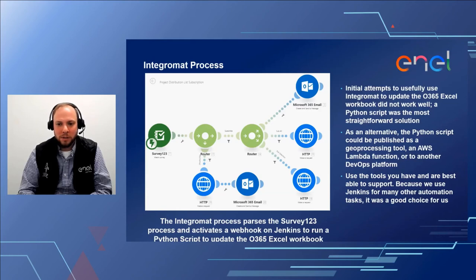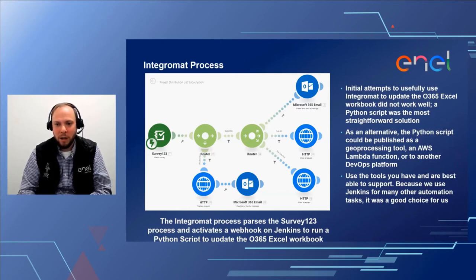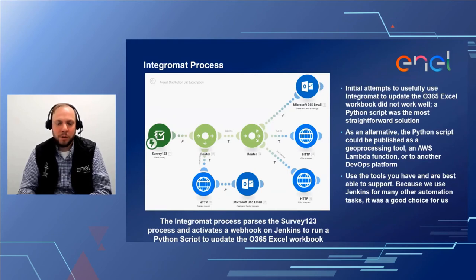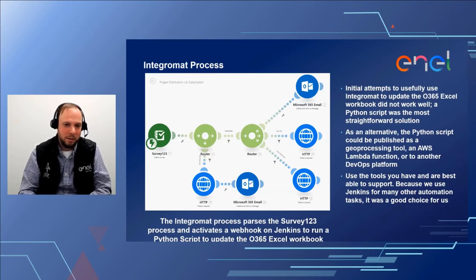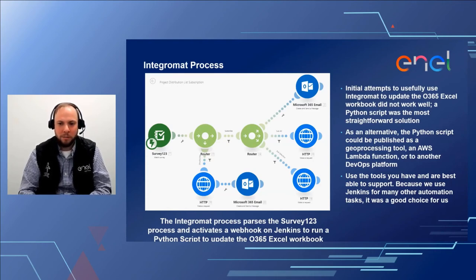Other ways this could be accomplished: you could take that Python script and publish it as a geoprocessing tool and call it that way, or publish it as an AWS Lambda function or to whatever other DevOps platform your organization utilizes. We use Jenkins because that's a tool we use for many other automation tasks. There's no right or wrong—it's whatever works best and you're best able to support.